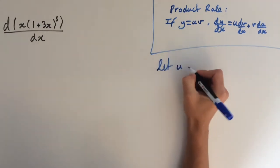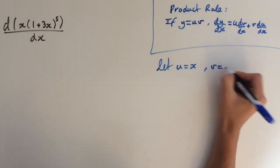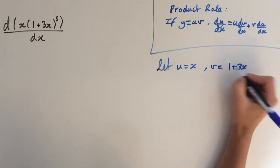So we'll let u equal x and v equal 1 plus 3x to the power of 5.